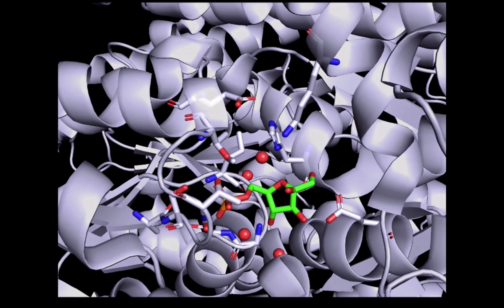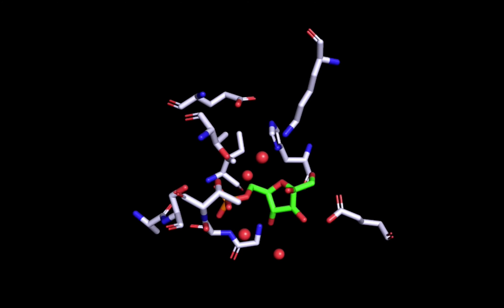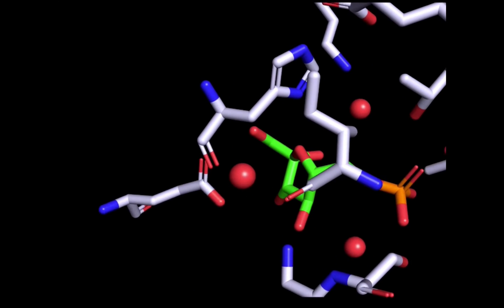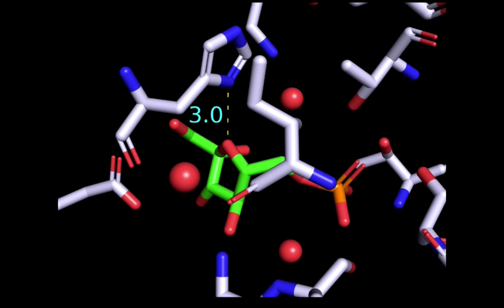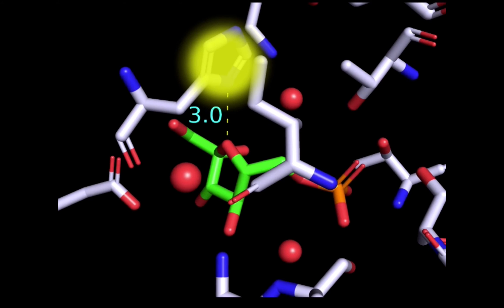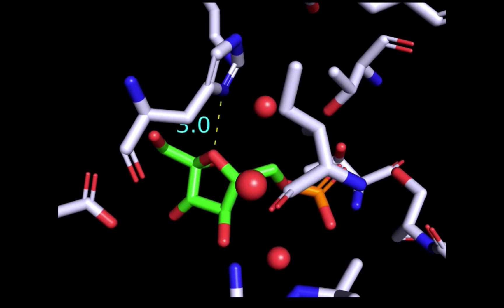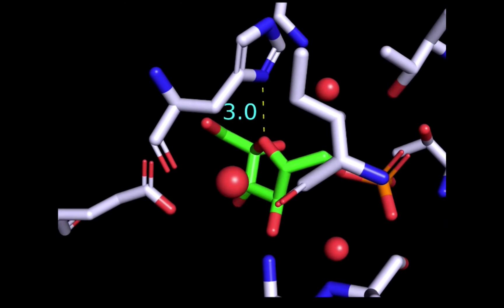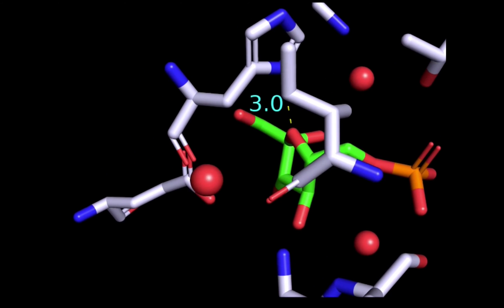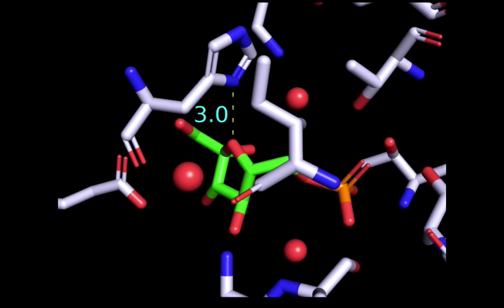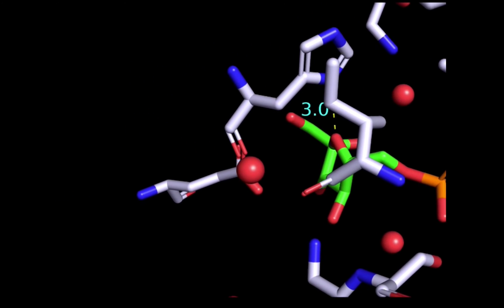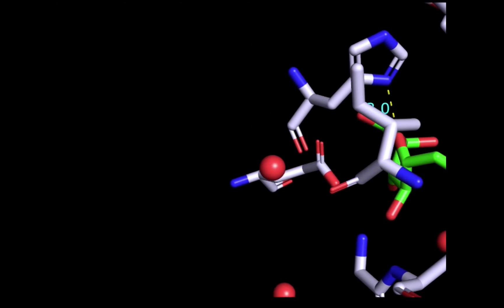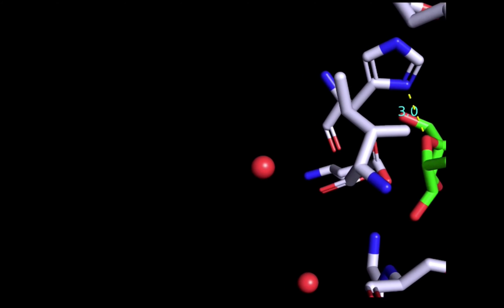In gluconeogenesis, this is the substrate of the reaction. So, to begin, the ring must first be opened. Being a basic amino acid, histidine can become protonated. This histidine here is very close, within hydrogen bonding range of the ring oxygen, so this is likely the proton donor.